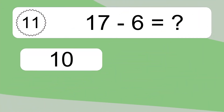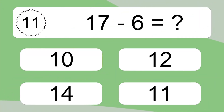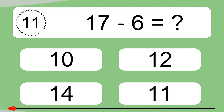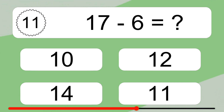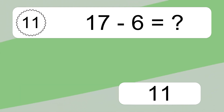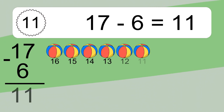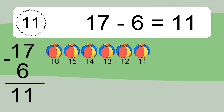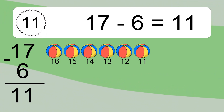17 minus 6 equals what? 17 minus 6 equals 11. Let's count it: 16, 15, 14, 13, 12, 11.